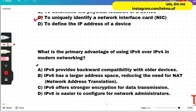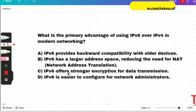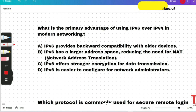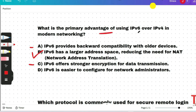What is the primary advantage of using IPv6 over IPv4 in modern networking? Option B will be correct because there are secondary functions or secondary advantages of IPv6. But the primary advantage is this: IPv6 has a larger address space, reducing the need for NAT, or network address translation.